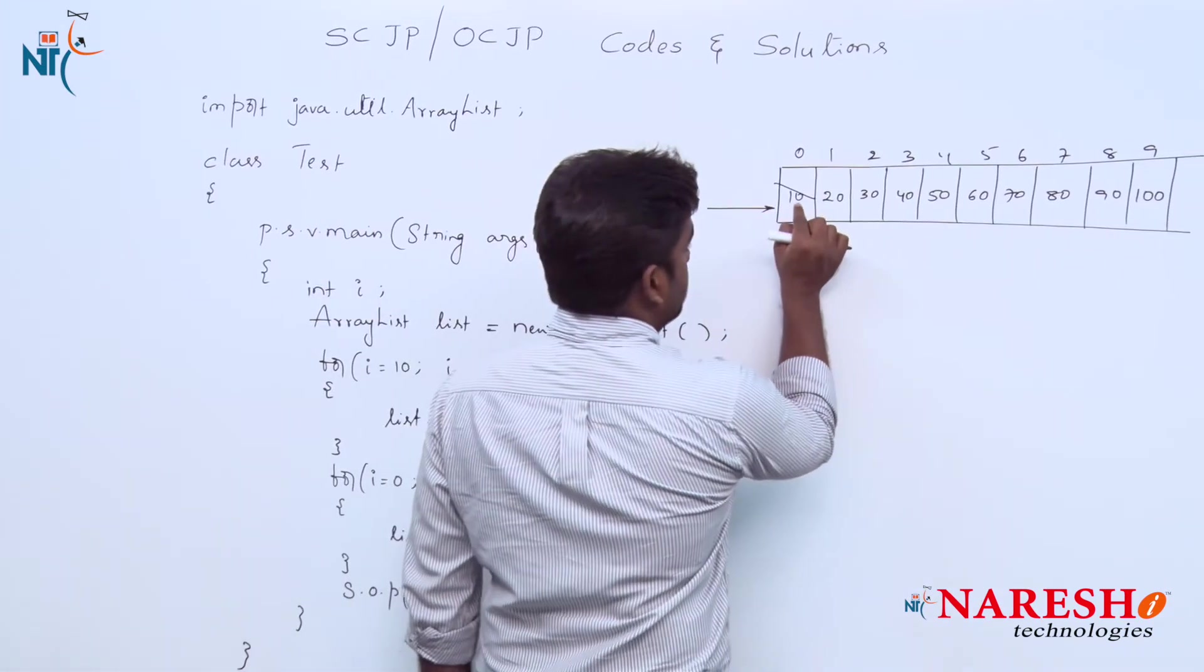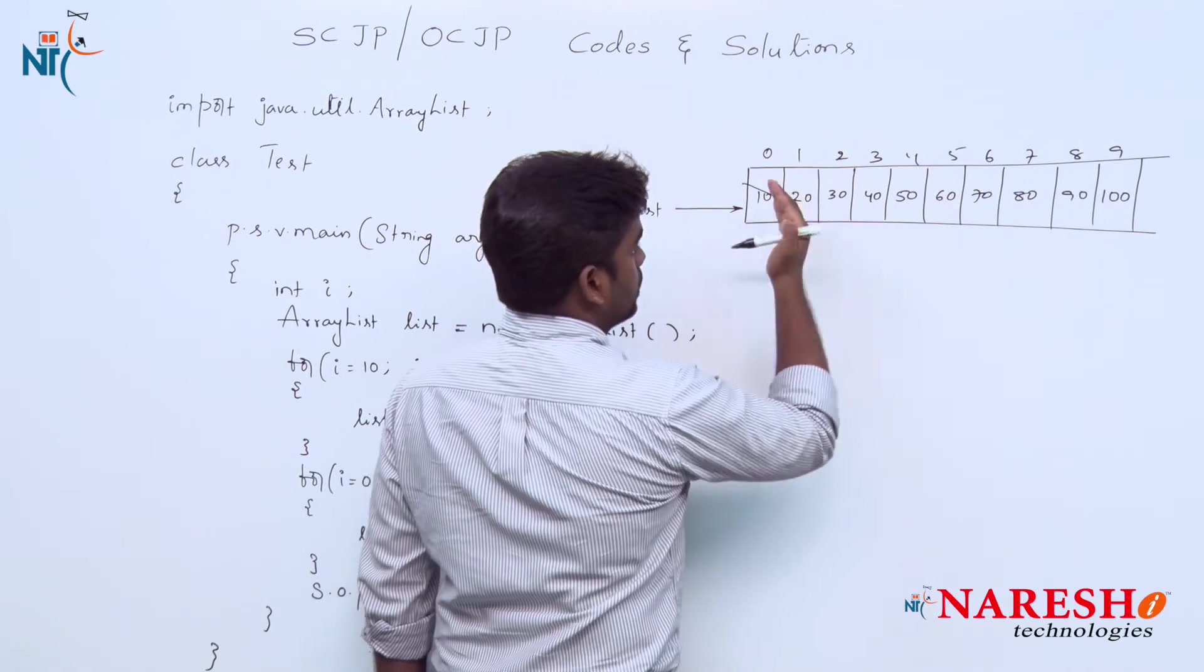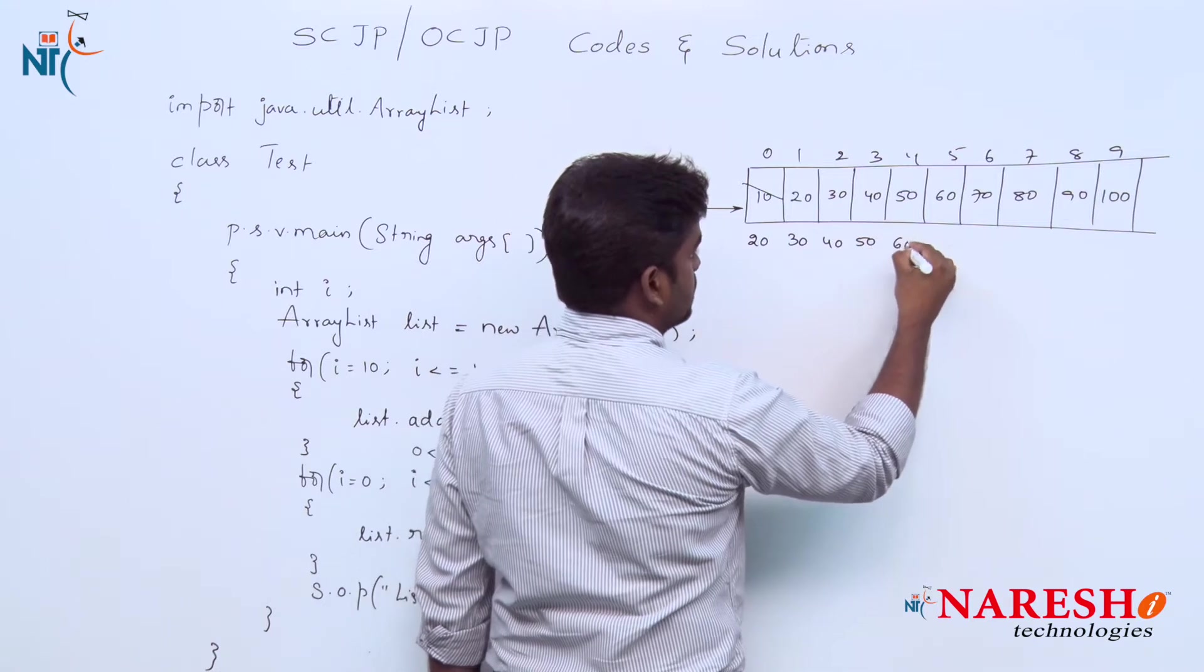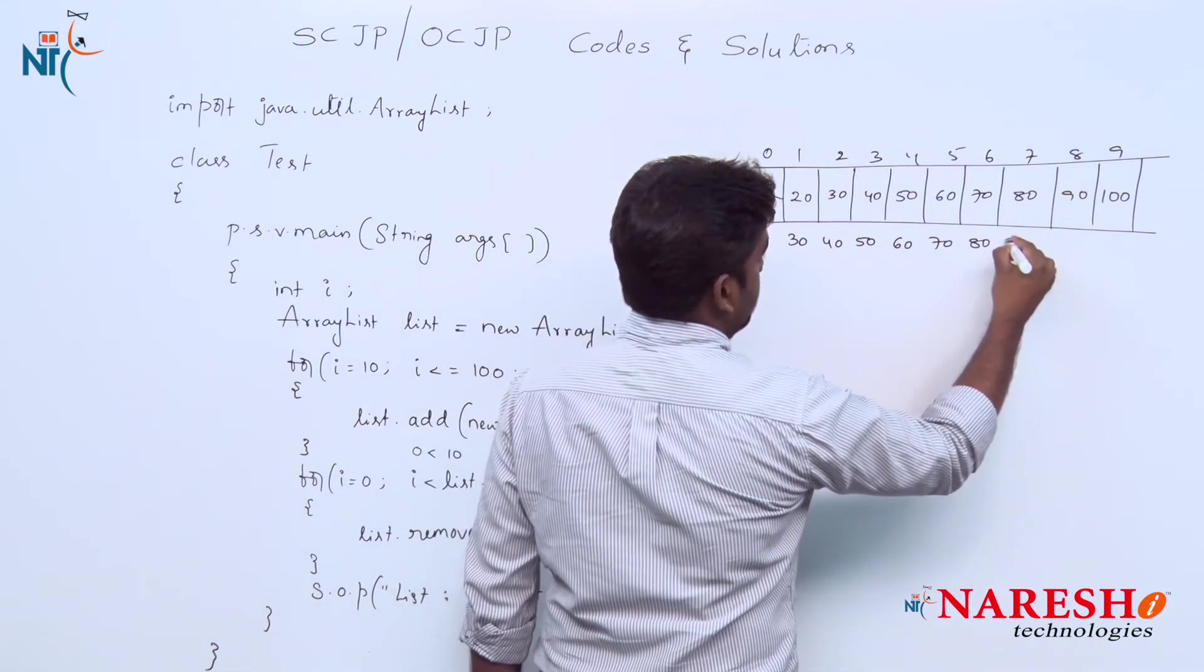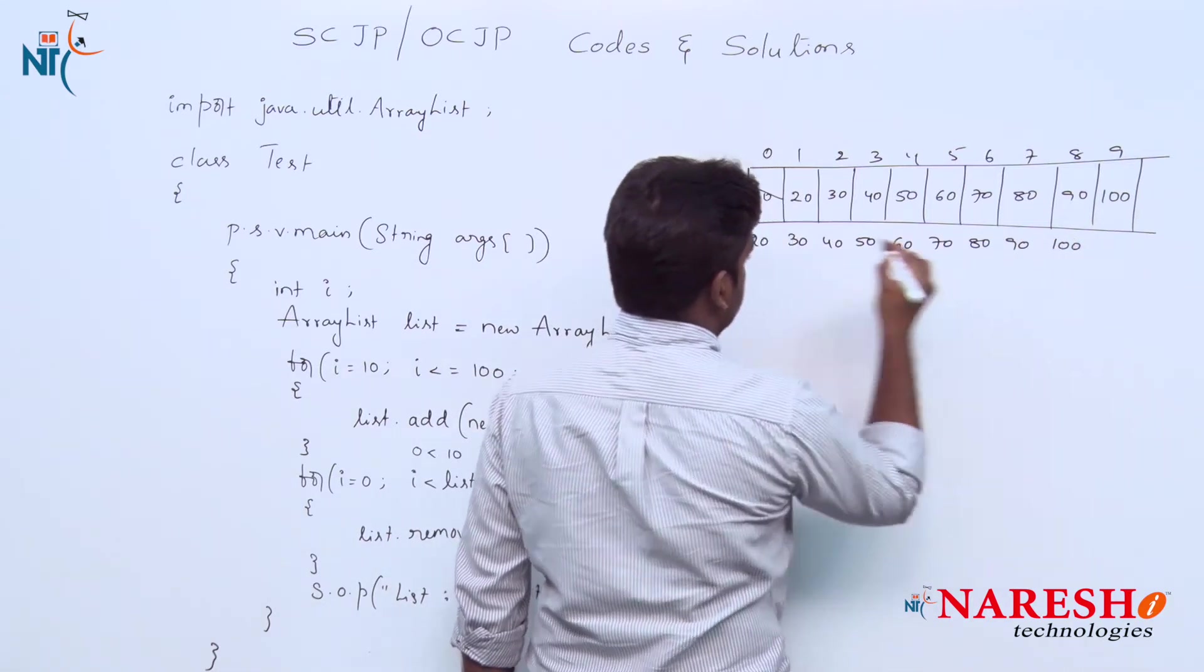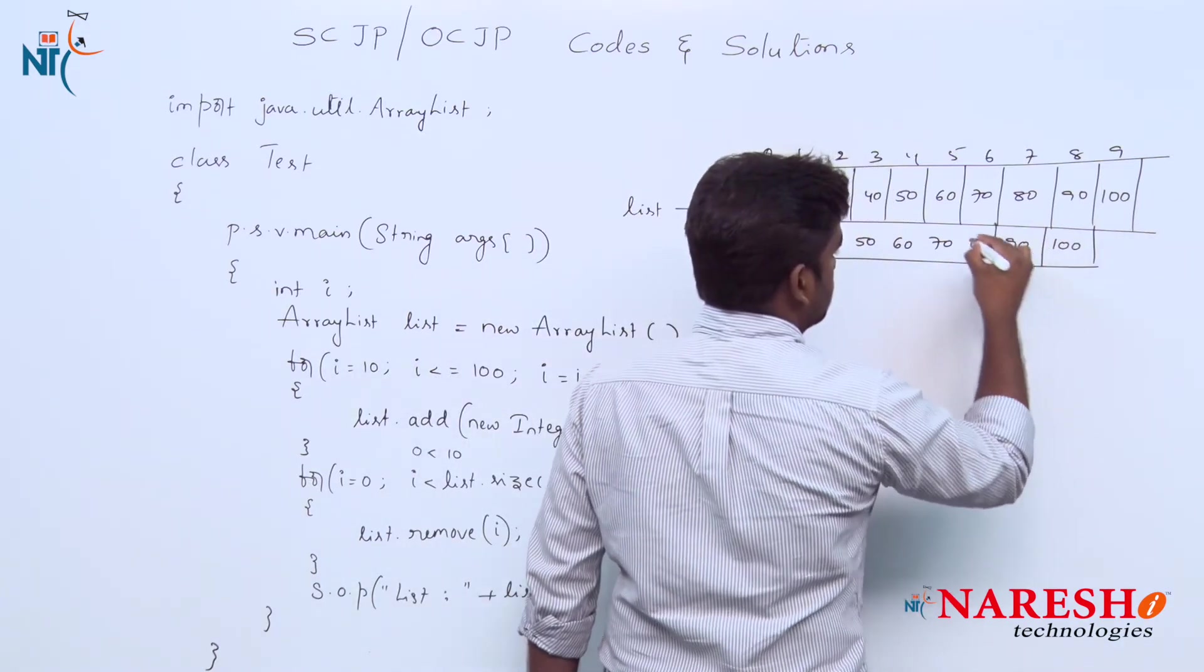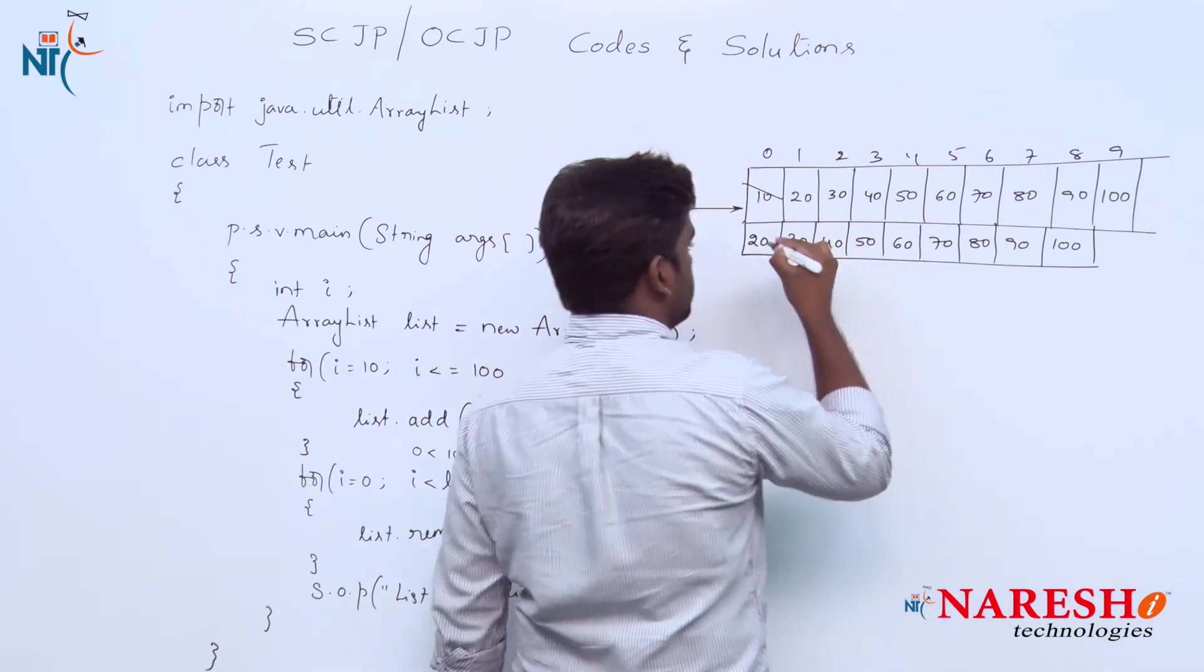One thing we should understand: whenever we remove the element in the first location, all the elements will be shifted. So 20, 30, 40, 50, 60, 70, 80, 90, 100. The size will decrease. Now the size is only 9.